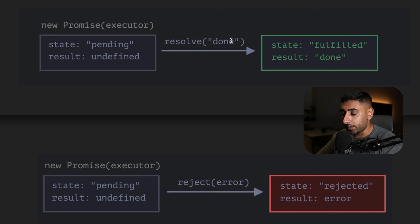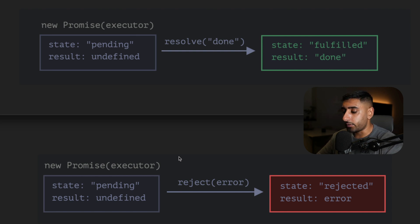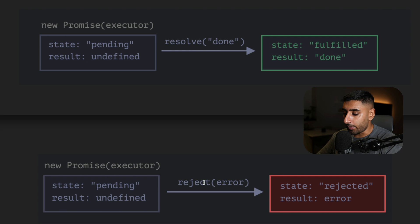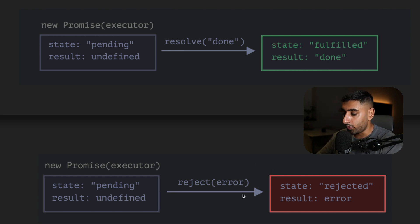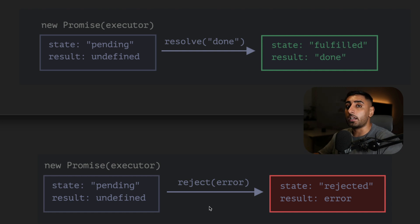Once we send that resolve message, it changes the state of the promise object to fulfilled, and the result is now 'done' — which is what we called resolve with. The same thing happens with reject. We start off in a pending state, and then if we reject passing in an error object, the state turns to rejected with the result being the error we passed through. You can pass through meaningful data or objects when you either resolve or reject the promise.